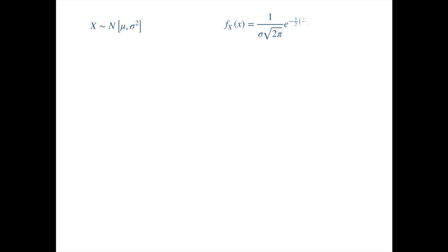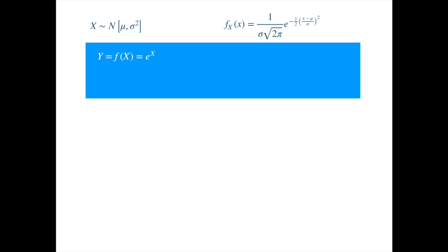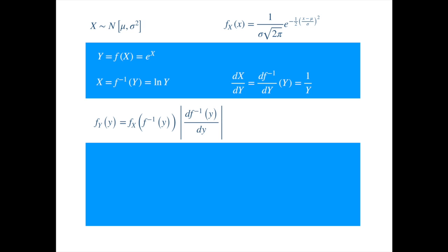Let's demonstrate the transformation with examples. Let's assume X is normally distributed with some given mean and variance. Recall that the density of a normal variable is as follows. Now, let's assume we have been asked to calculate the density of the exponential of X under the same probability measure. We will need the inverse function and the derivative, which we quickly calculate. The inverse of exponential is just the log function, so we get. The derivative of log is easy to calculate. Now, let's recall the density transformation formula. Plugging in the inverse function and its derivative that we just calculated, we get. Substituting for the density of X evaluated at the given value of log of Y, we get the log-normal density formula.